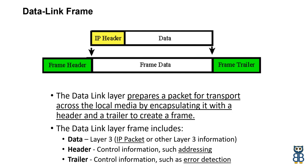The data link layer frame includes three parts. First, the header, which contains control information such as addressing. Second, data, which contains the IP packet and other layer 3 information. Third, the trailer, which also contains control information such as error detection.